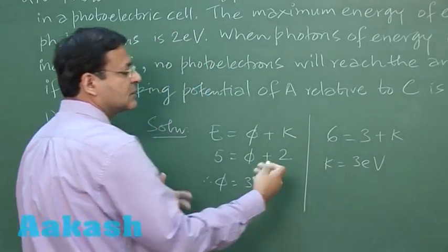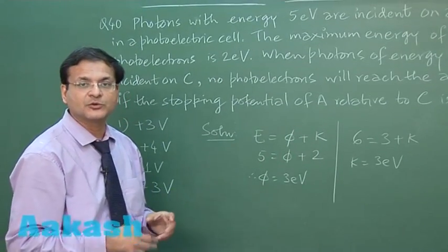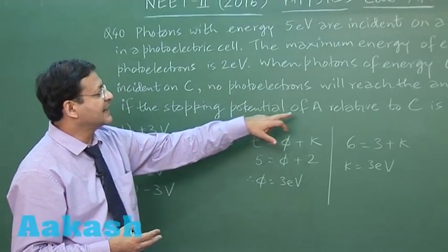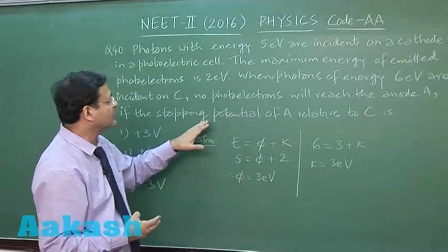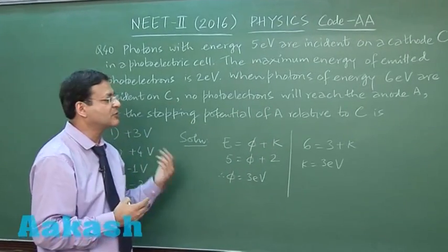So all the electrons which are coming out have maximum kinetic energy of 3 electron volt, so the stopping potential will be 3. Now this is the negative potential being applied to A. They are asking you to find out the potential of A relative to C, so A is at negative potential compared to C.